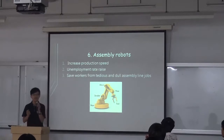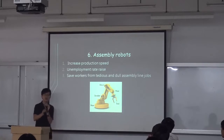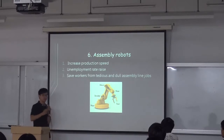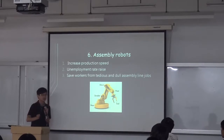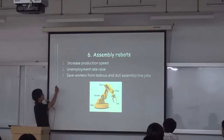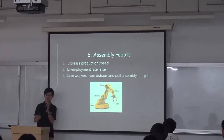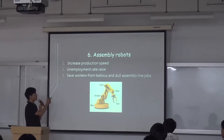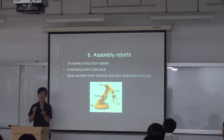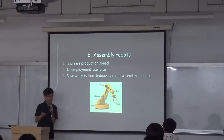The next one is assembly robots. This kind of robot is used in industrial production, because it can speed up the production speed and expand the capabilities of the industrial world. It can increase production speed. It also has a disadvantage — the unemployment rate might rise, because we will normally need labor in factories.